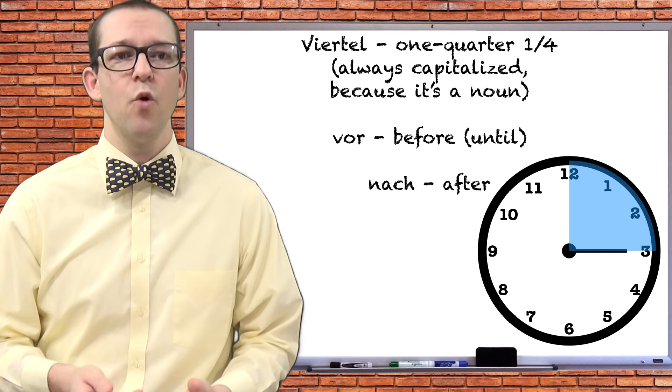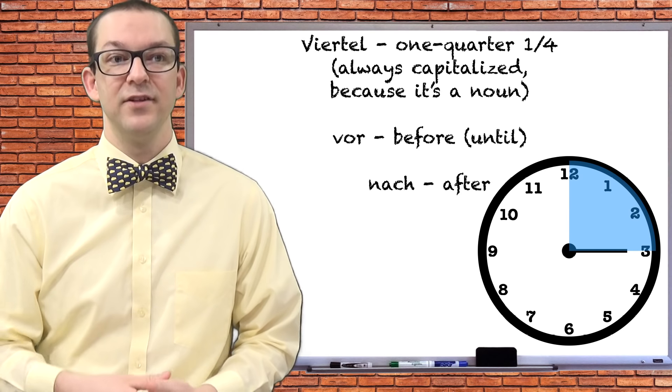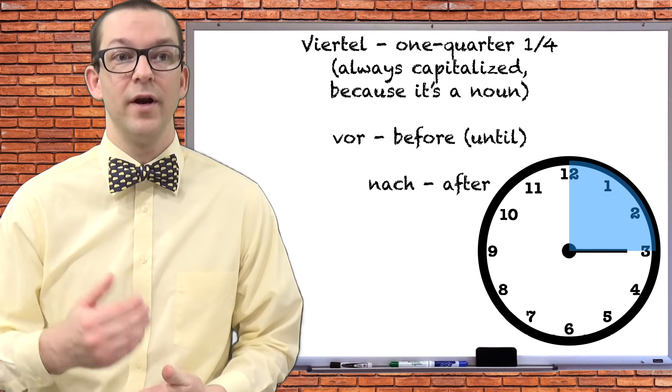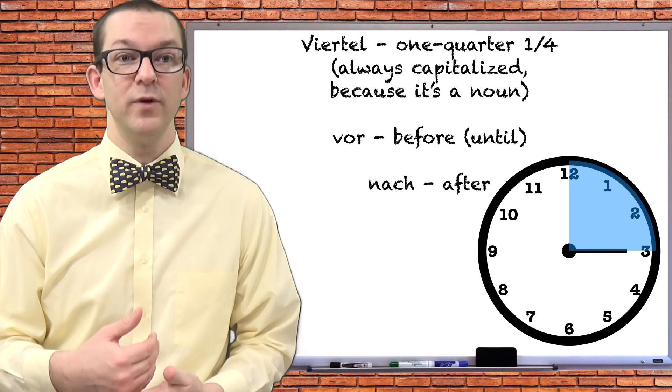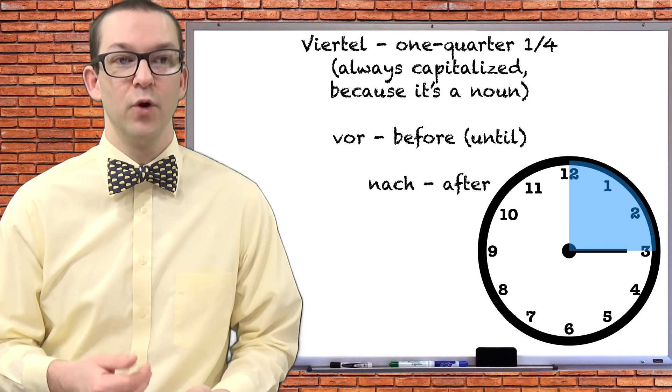In English, you can use quarter hours to say that it's 15 minutes before or after the hour. Simply use vor or nach, like we did in the examples from last week, and the word viertel, which is the German word for quarter.